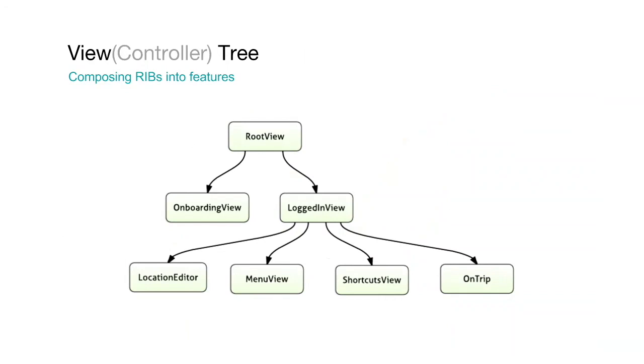But because we can have a view tree that's asymmetric to the business tree, now we can have a shallower tree where everything is just all together. They're all siblings. Shortcuts, location editor, map, and so on. They're all siblings. So then, of course, it becomes really easy to coordinate the animation, to slide out one out, slide in the other one.